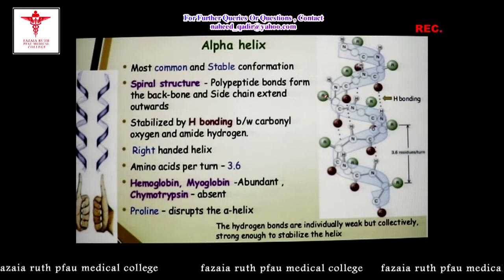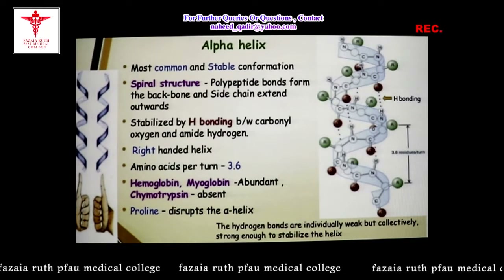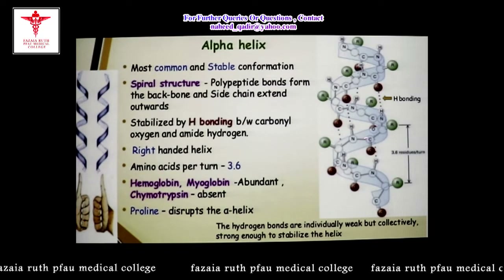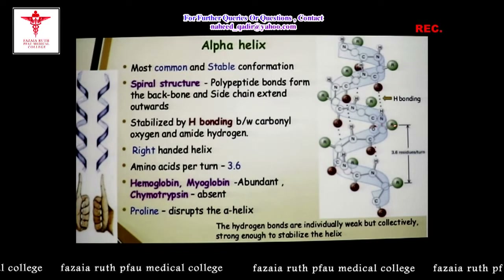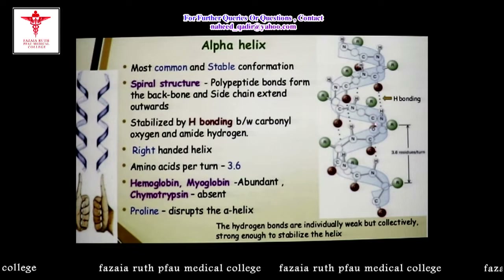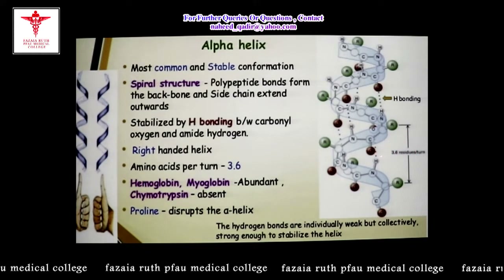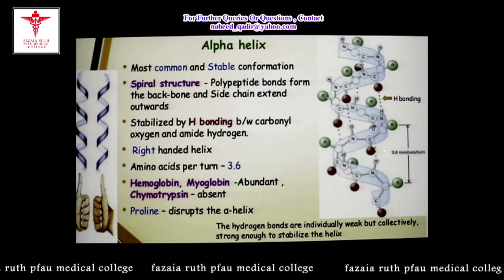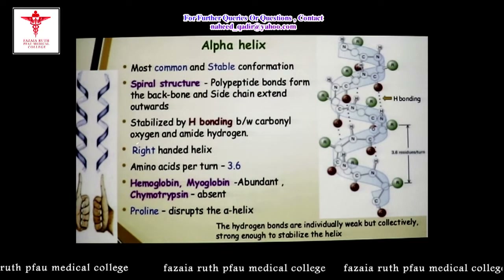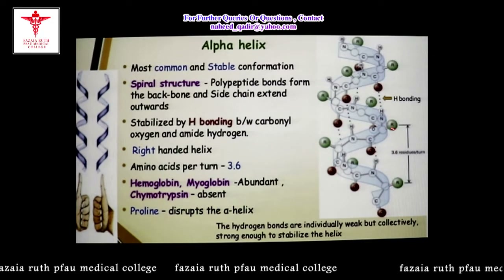The alpha helix backbone is stabilized by hydrogen bonding. This alpha helix can be right-handed or left-handed, but in nature the right-handed helix is commonly observed in proteins. According to X-ray crystallography, one turn of the alpha helix contains 3.6 amino acid residues per turn, and the length of one turn is 0.54 nanometers.